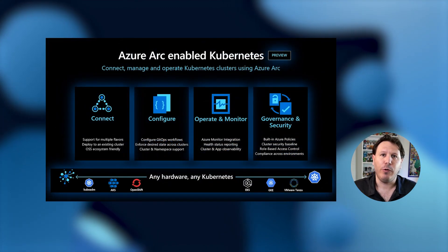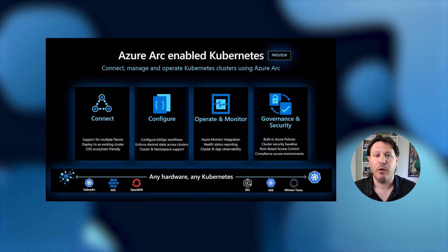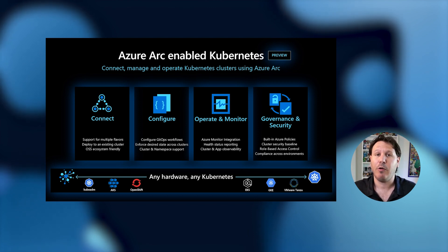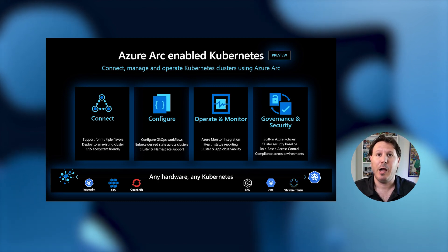To be more focused, today we're going to talk about Azure Arc-enabled Kubernetes. Currently, we have three offerings when it comes to Azure Arc: Azure Arc-enabled Kubernetes, Azure Arc-enabled servers, and Azure Arc-enabled data services, and we have more coming announced at this Ignite.